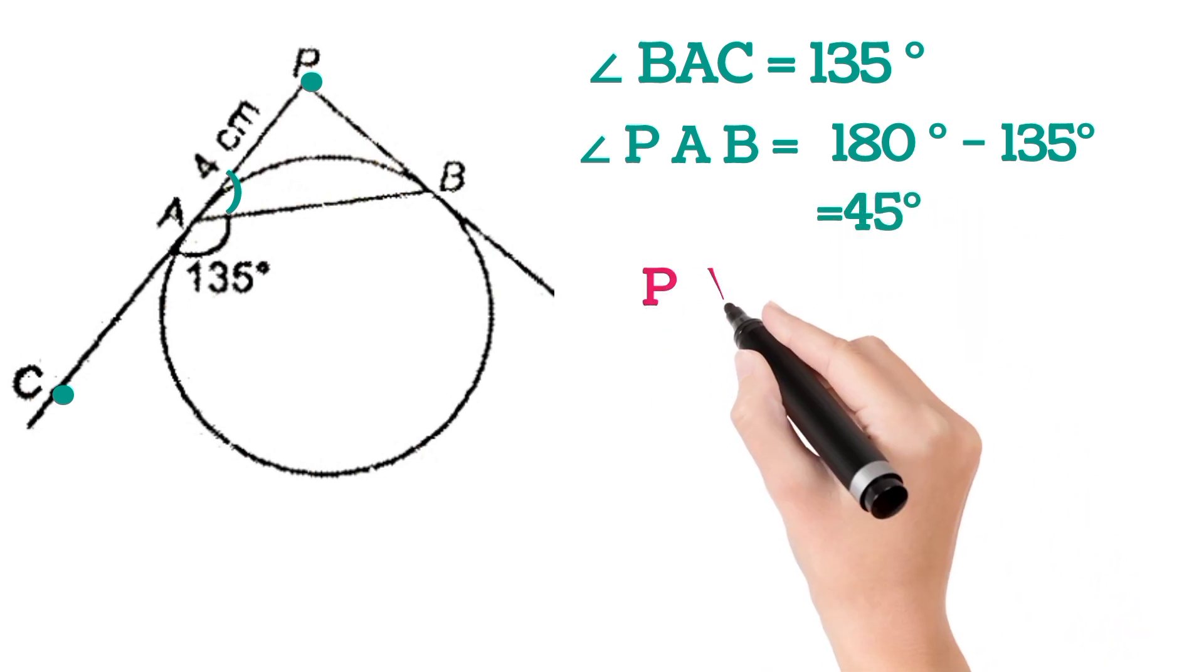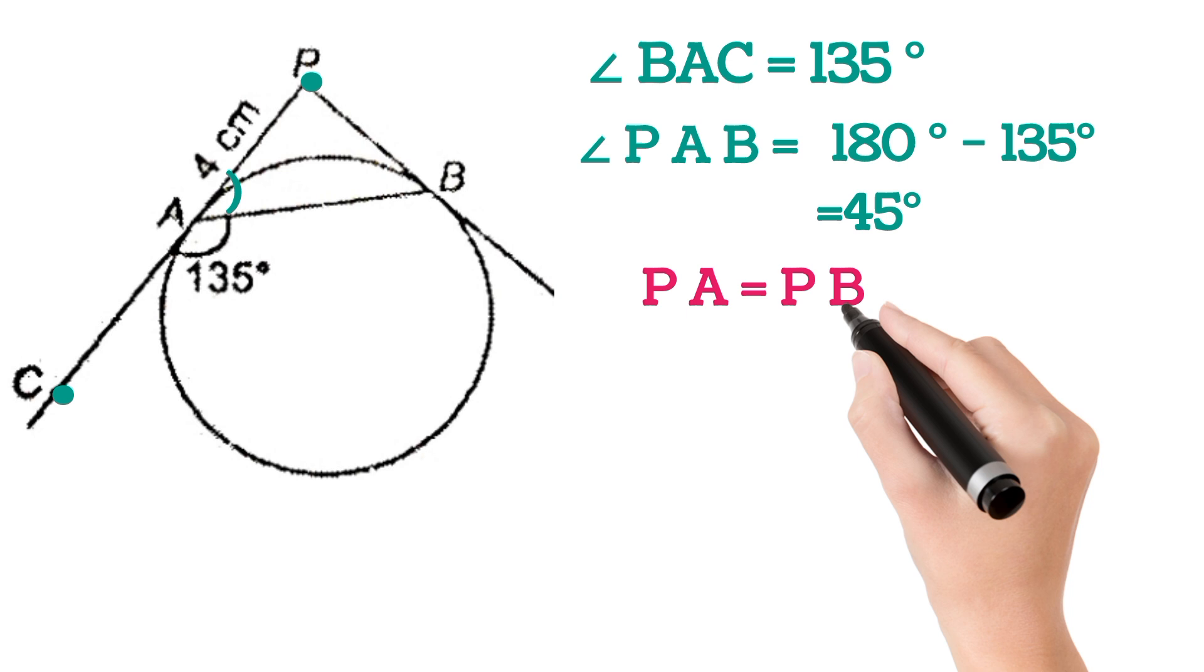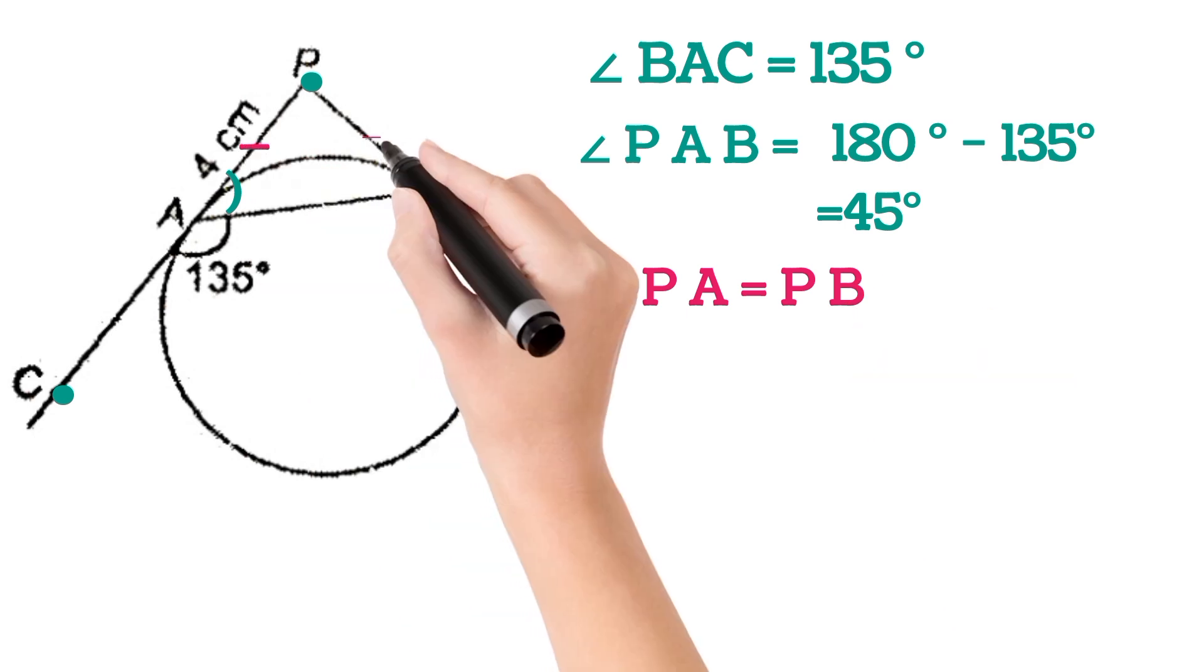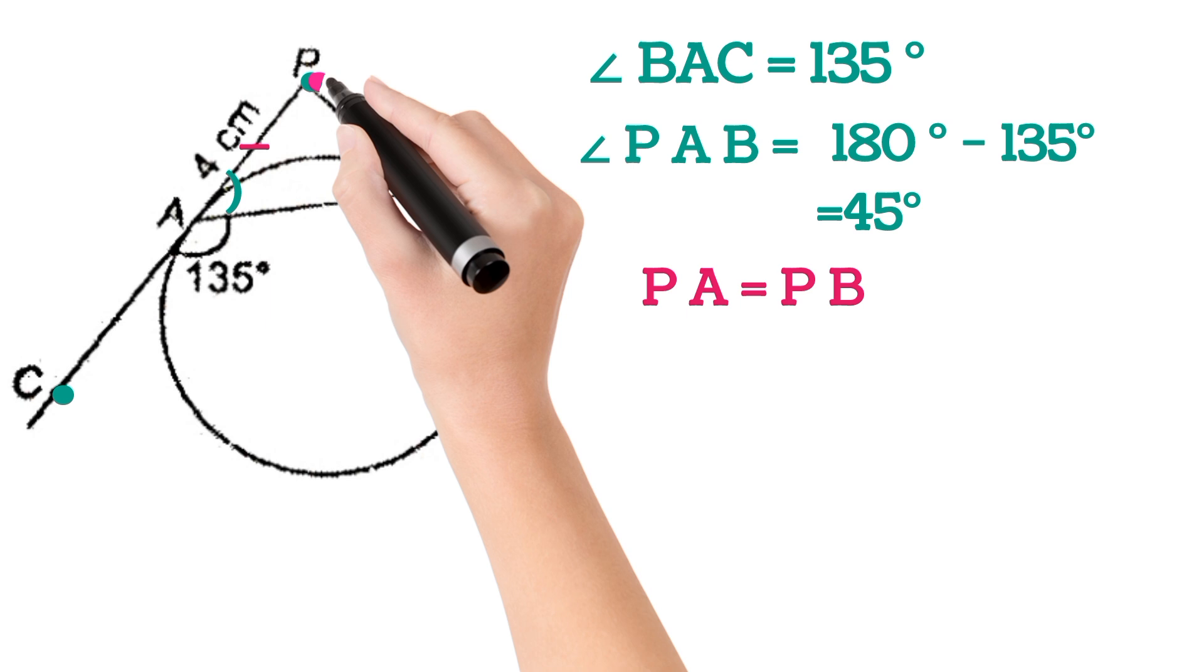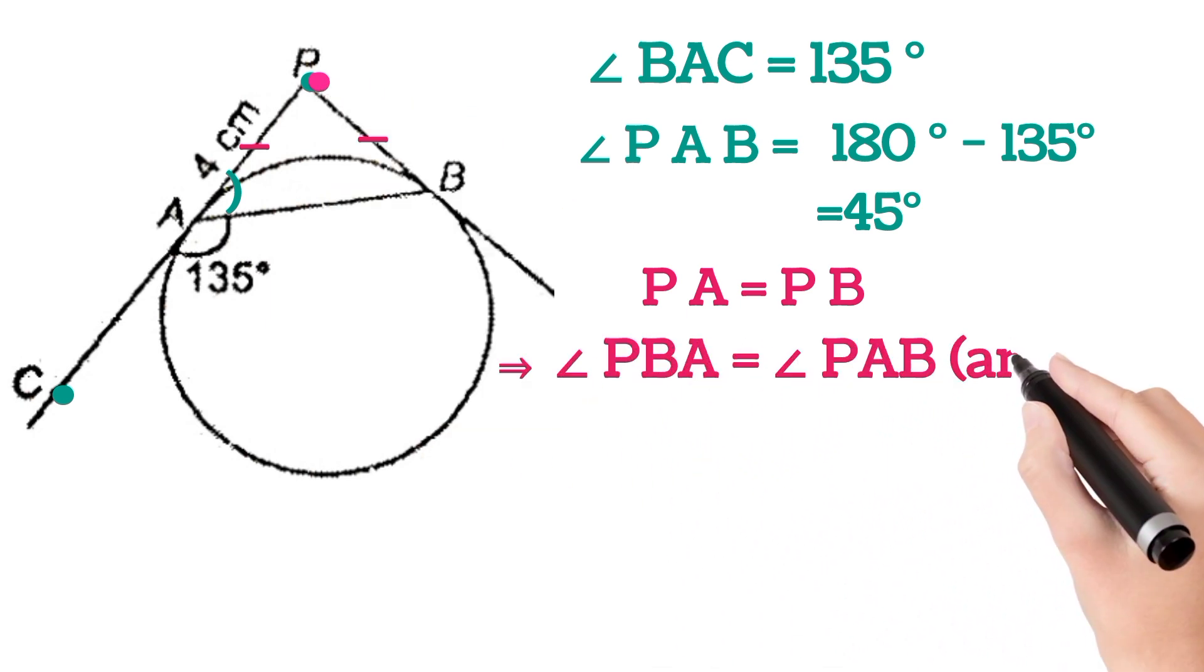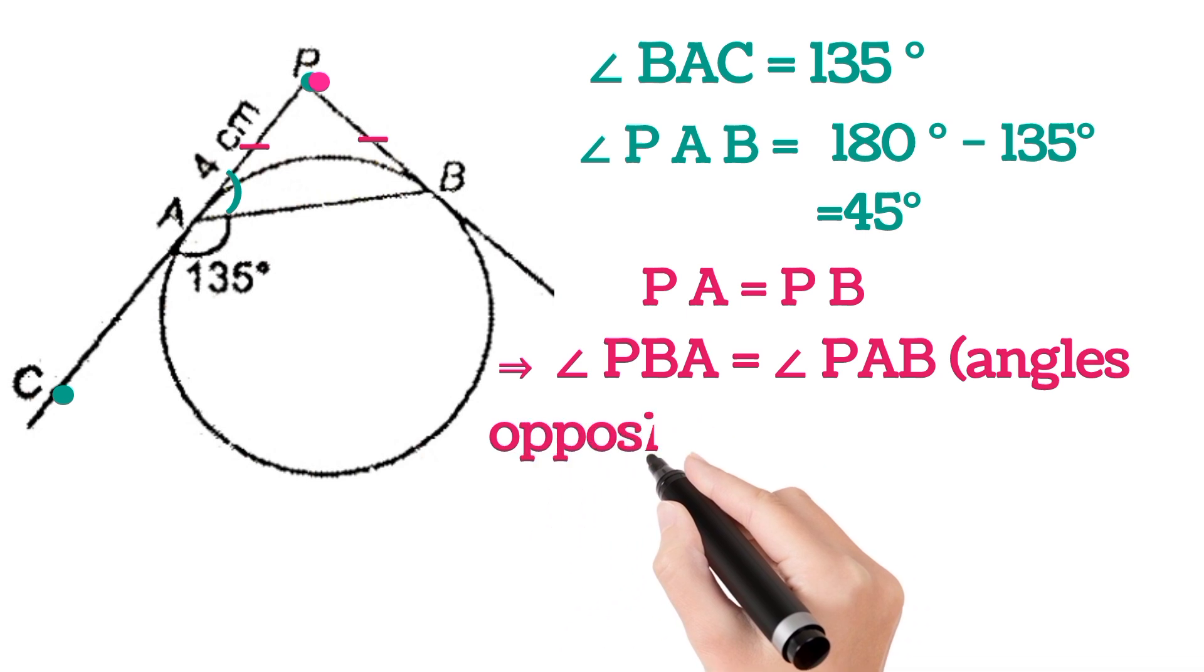Now PA is equal to PB because both are tangents from the same point to the circle, so they will be equal. This means angle PBA will be equal to angle PAB because angles opposite to equal sides are equal.